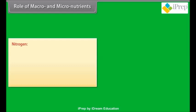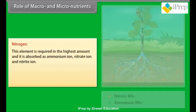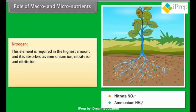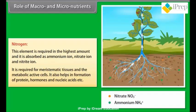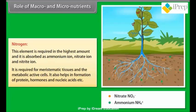Nitrogen: this element is required in the highest amount and is absorbed as ammonium ions, nitrate ions, and nitrite ions. It is required for meristematic tissues and metabolically active cells. It also helps in the formation of proteins, hormones, and nucleic acids.